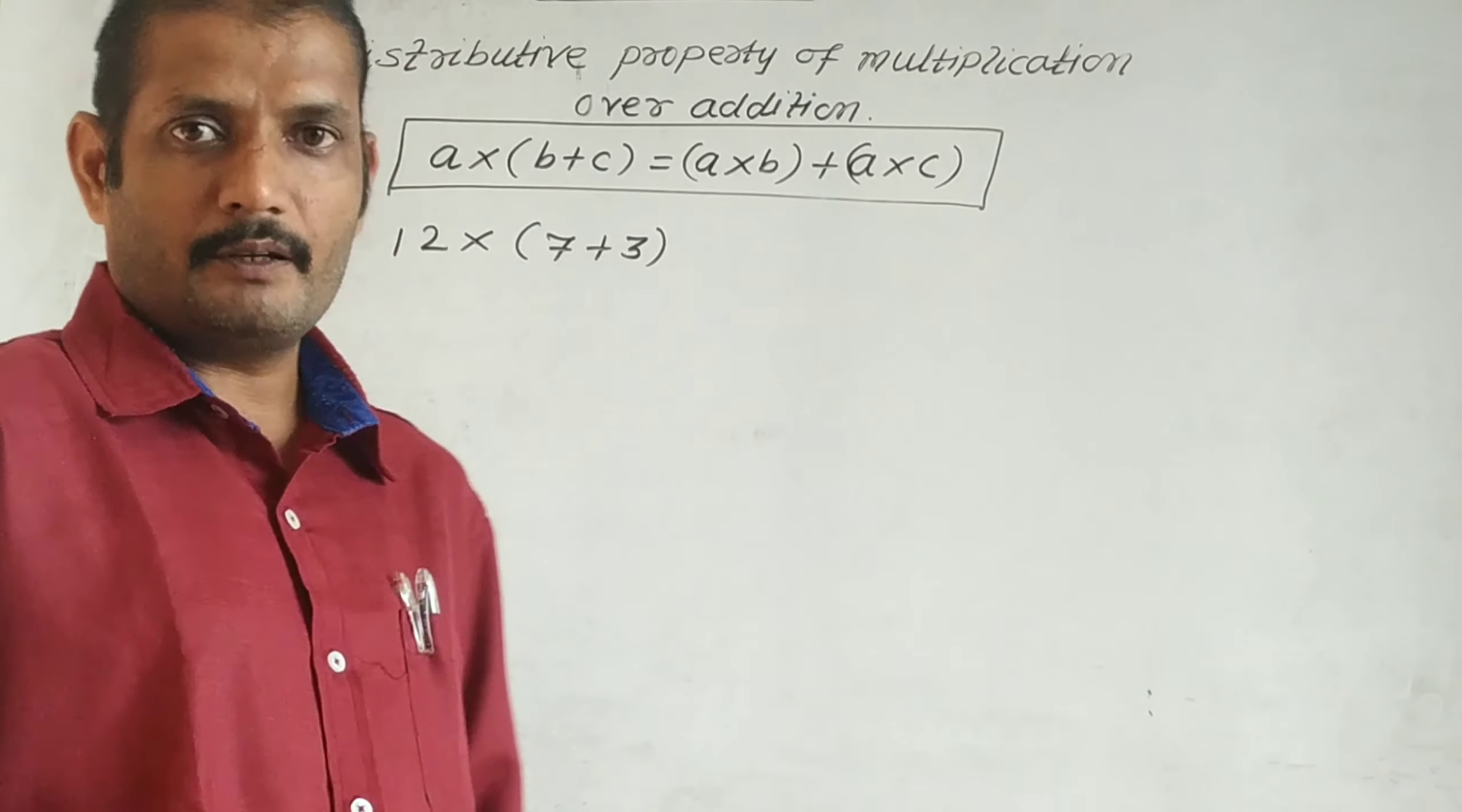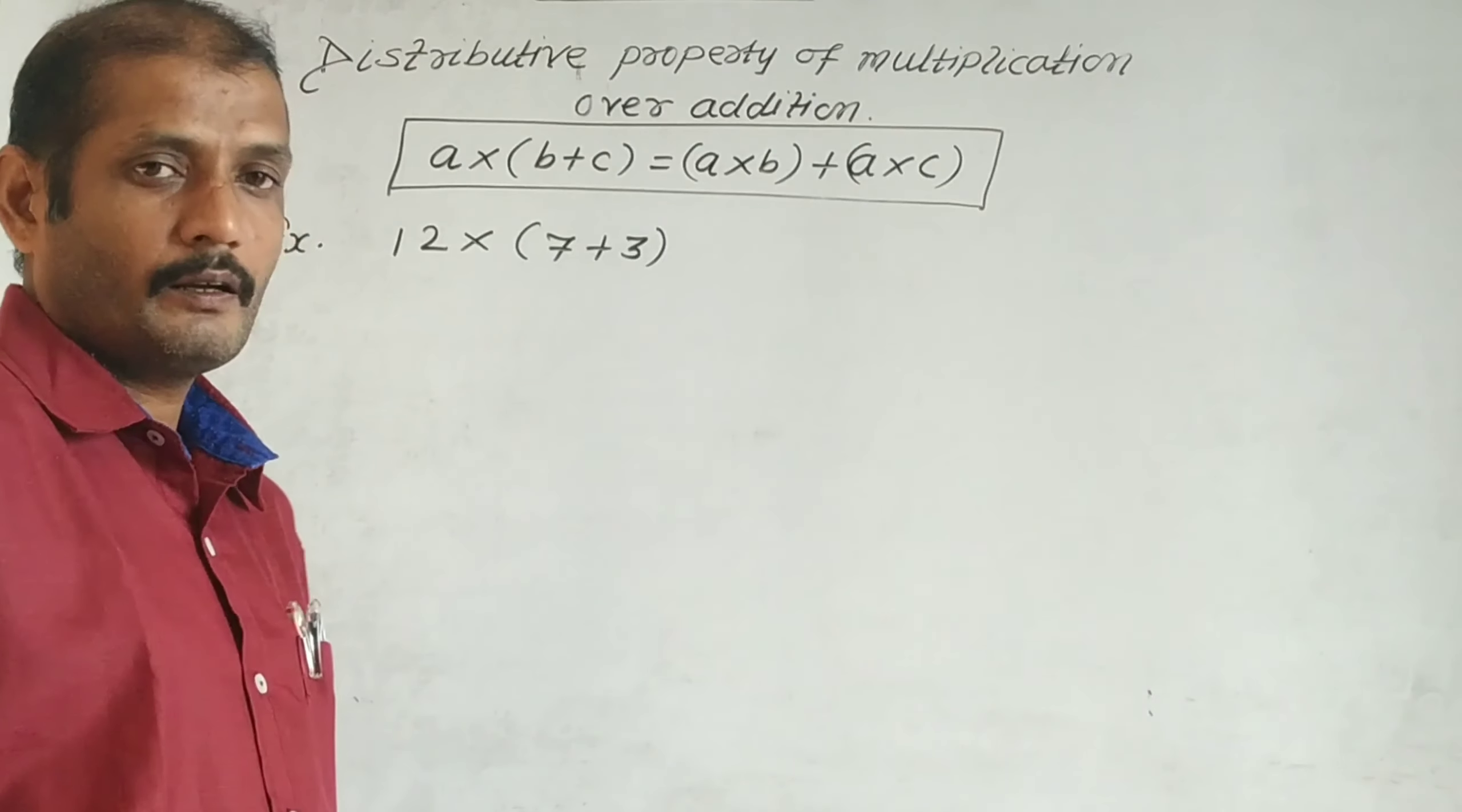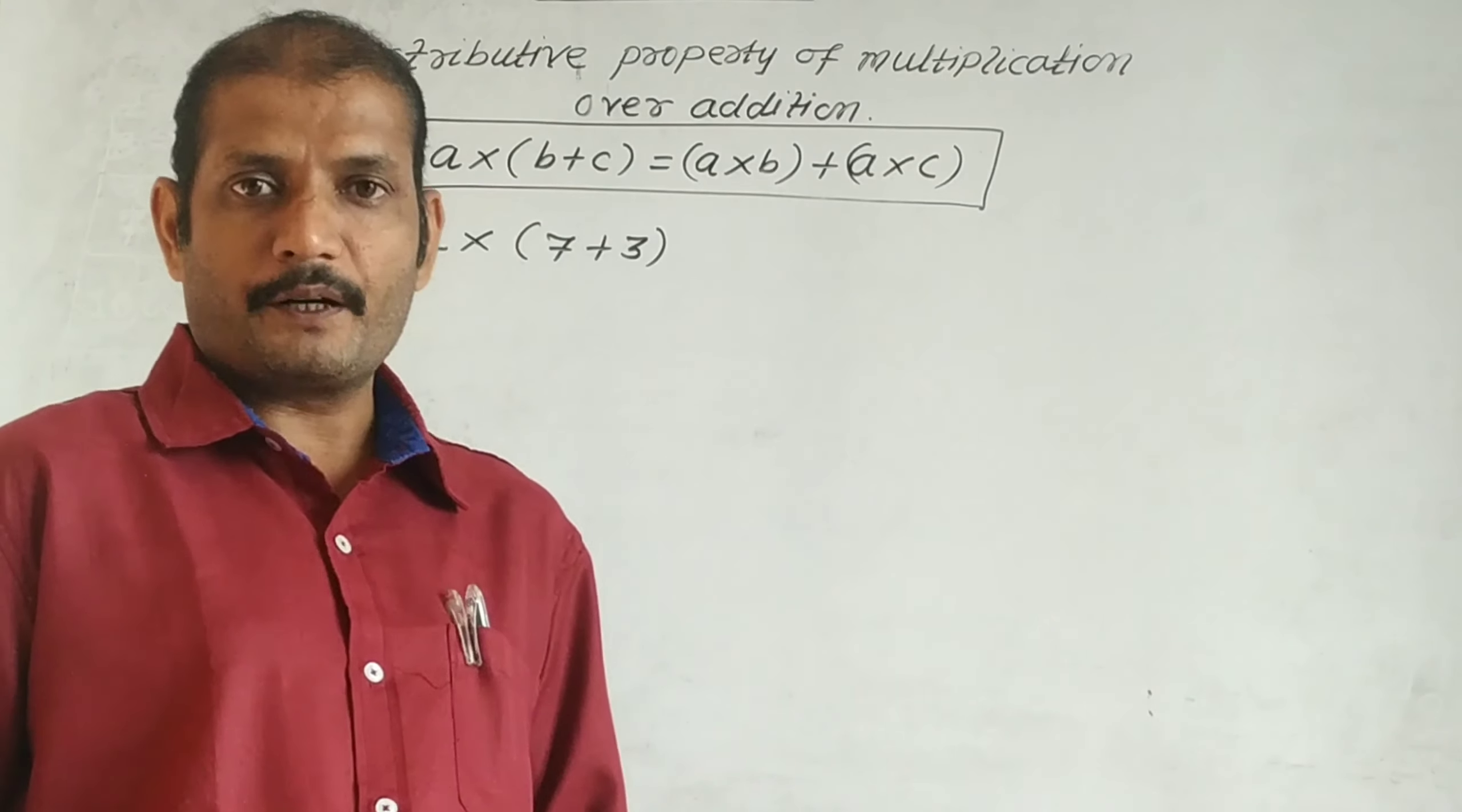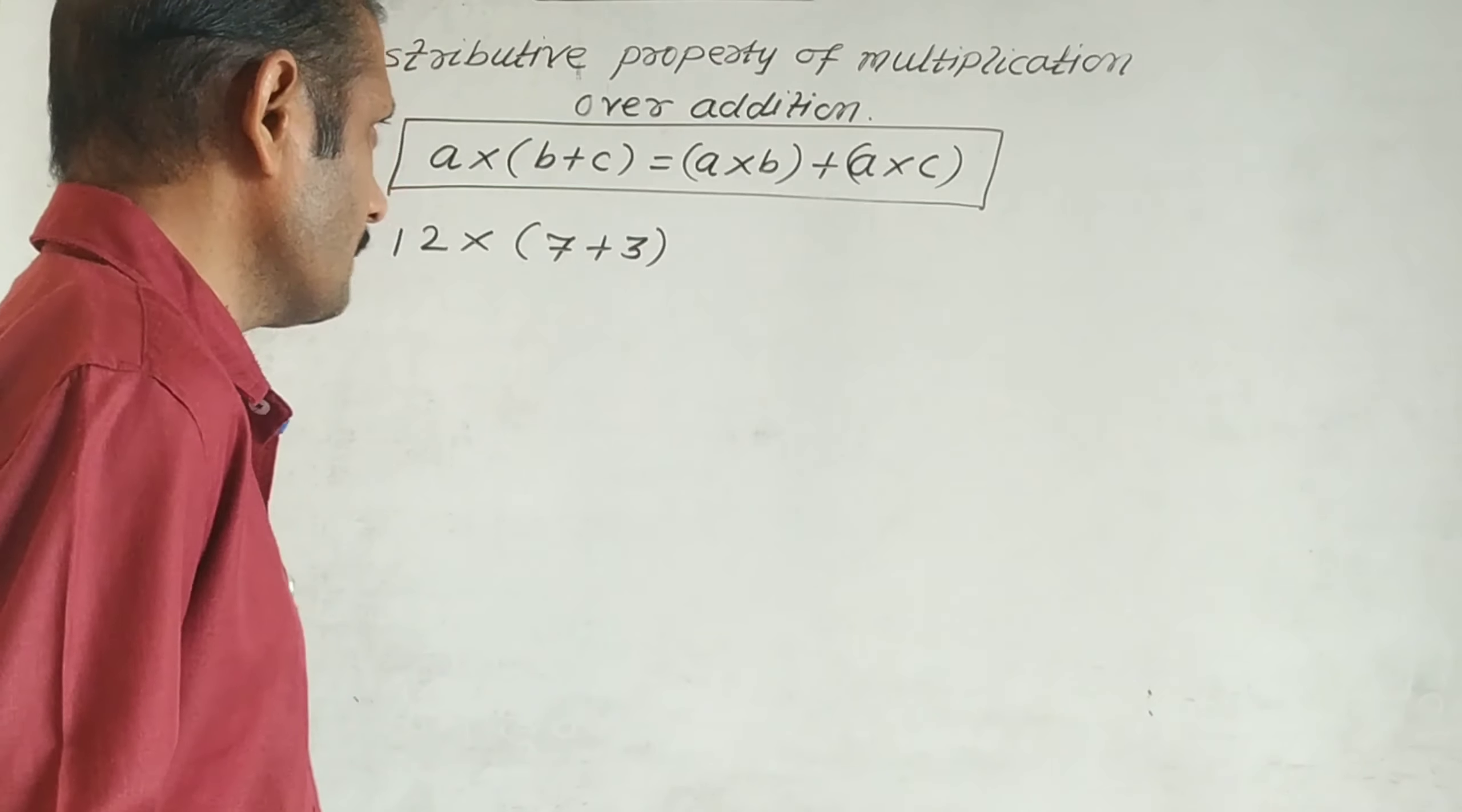The next property we'll see is property of multiplication of whole numbers over addition, which is the distributive property of multiplication over addition. So distributive has two properties: one for addition and one for subtraction. First we will see addition.